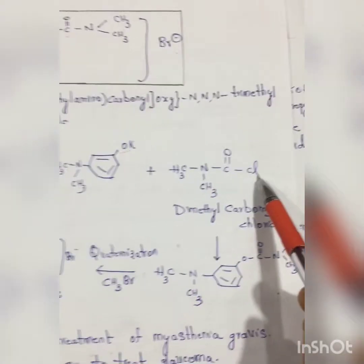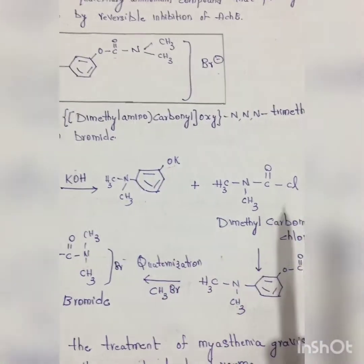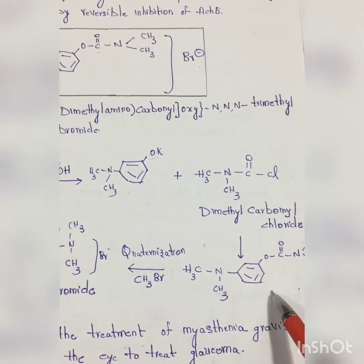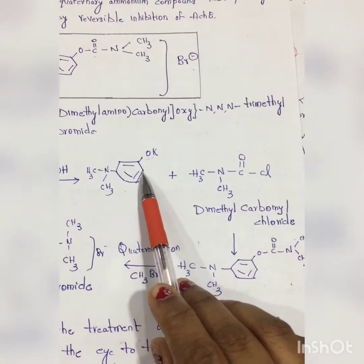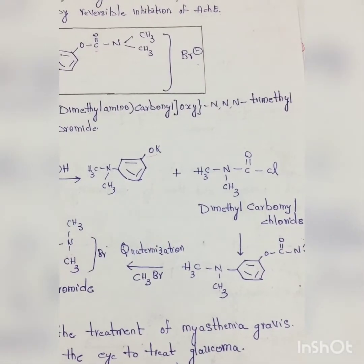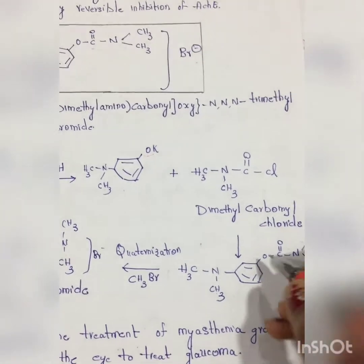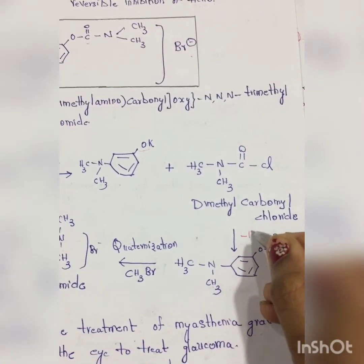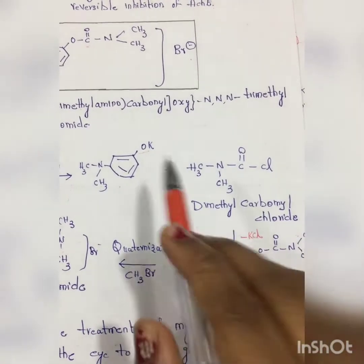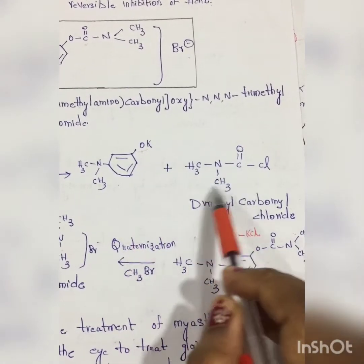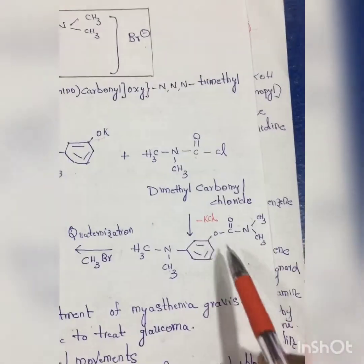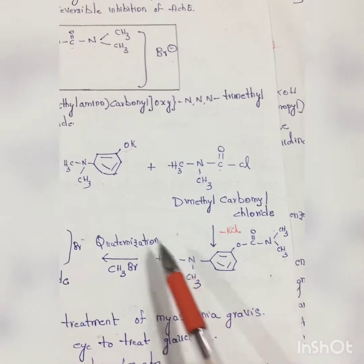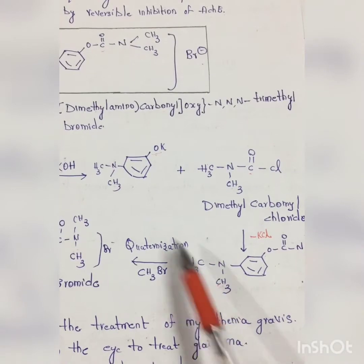This intermediate when treated with dimethyl carbamyl chloride, what we will get - here also chlorine is here. So we will do this: here only O is here, rest is here. So O-C double bond O-N-CH3-CH3. O-C double bond O-N-CH3-CH3, this will be remaining as it is.